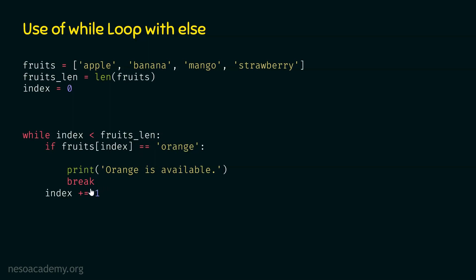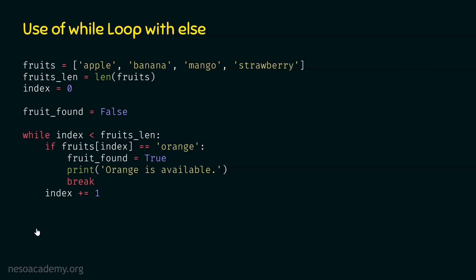One way to achieve this goal: we can create a variable fruit_found and assign it false initially, meaning we assume orange is not available. If the condition fruits[index] equals orange is satisfied, then fruit_found must be assigned true. After the while loop, we will check: if not fruit_found — meaning if fruit_found is false — then we will print 'orange is not available.' Let's execute this code.